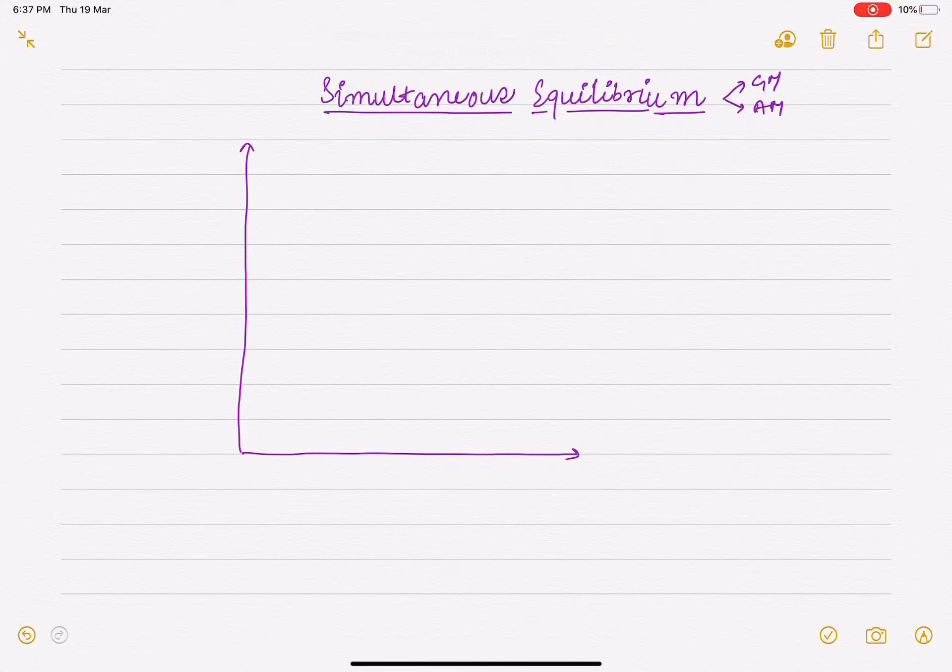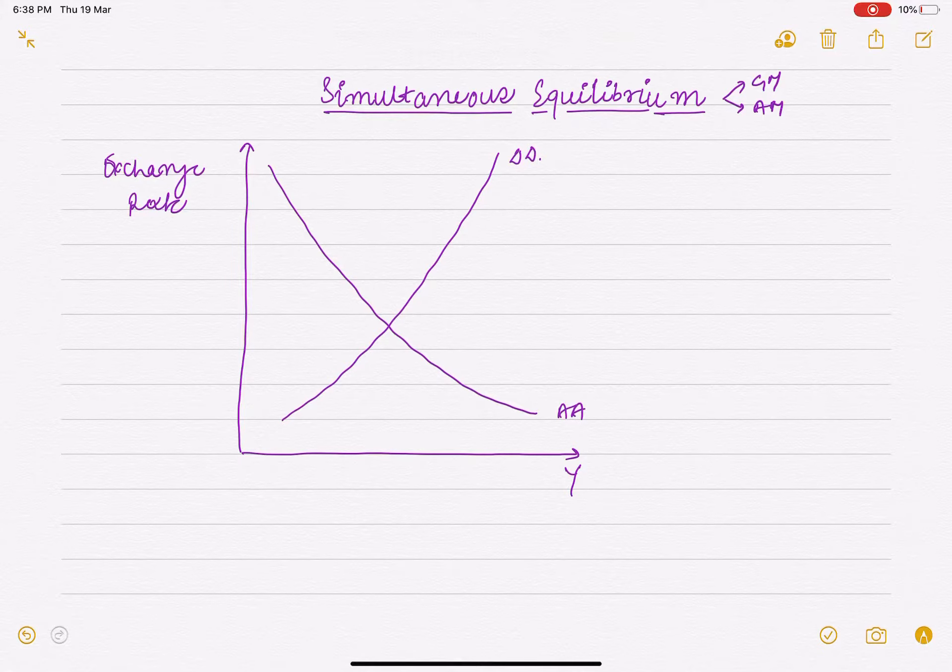So simultaneous equilibrium - on the x-axis we have income, on the y-axis we have exchange rate. This is the downward sloping curve which is our AA curve, and the upward sloping curve is our DD curve.